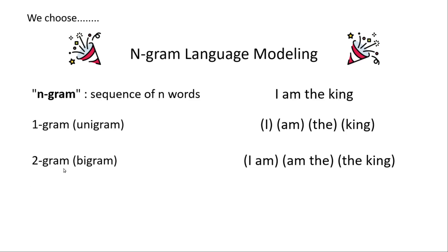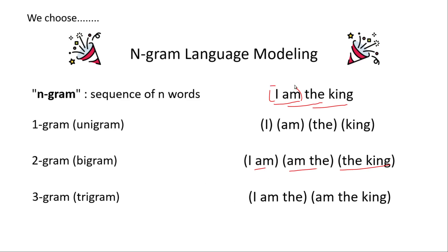Similarly for bigrams, you chunk it in a way like this. Considering this as a sentence, you can get bigrams: 'I am' is one bigram, then 'am the' becomes another bigram, and 'the king' becomes another bigram. These are the three bigrams we get. These bigrams are continuous — similar to unigrams, it needs to be continuous. So 'am' comes before 'I', 'the' comes before 'am' — that's the kind of knowledge we get from n-grams. Similarly for trigrams, we have 'I am the' and 'am the king'. These are the two trigrams that we get from this small sentence.